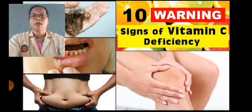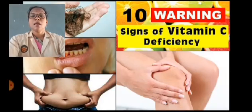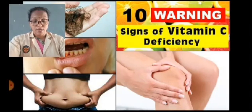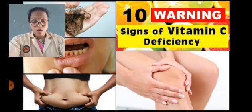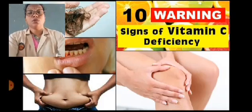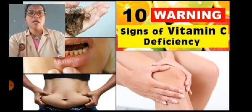A diet rich in vitamin C food items can cure this disease, especially citrus fruits, amla, guava, and tomatoes. All these we can eat to overcome the vitamin C deficiency.